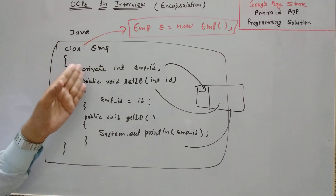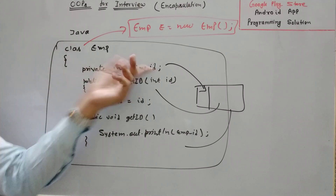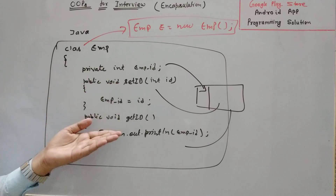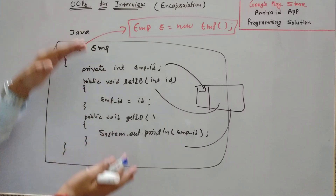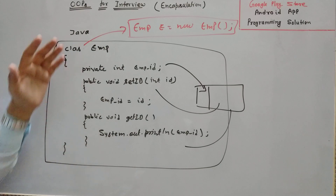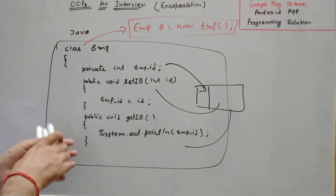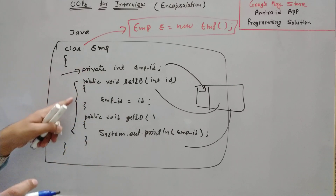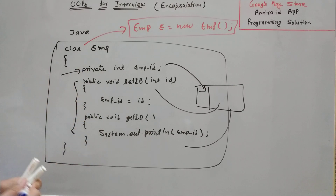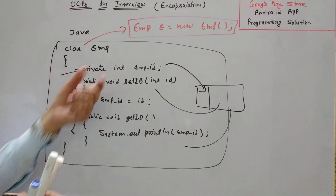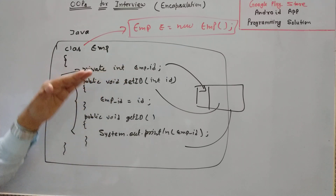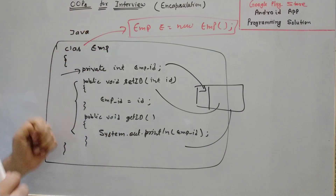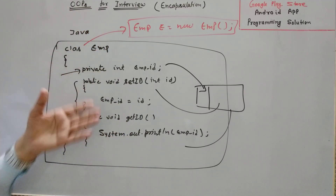It's possible that we have more than one data member — I have only taken one, which is employeeID — and more than one function; I have taken two functions. Basically I have wrapped these: the data members and member functions into a single unit, and this unit is known as class. The whole concept is known as encapsulation.